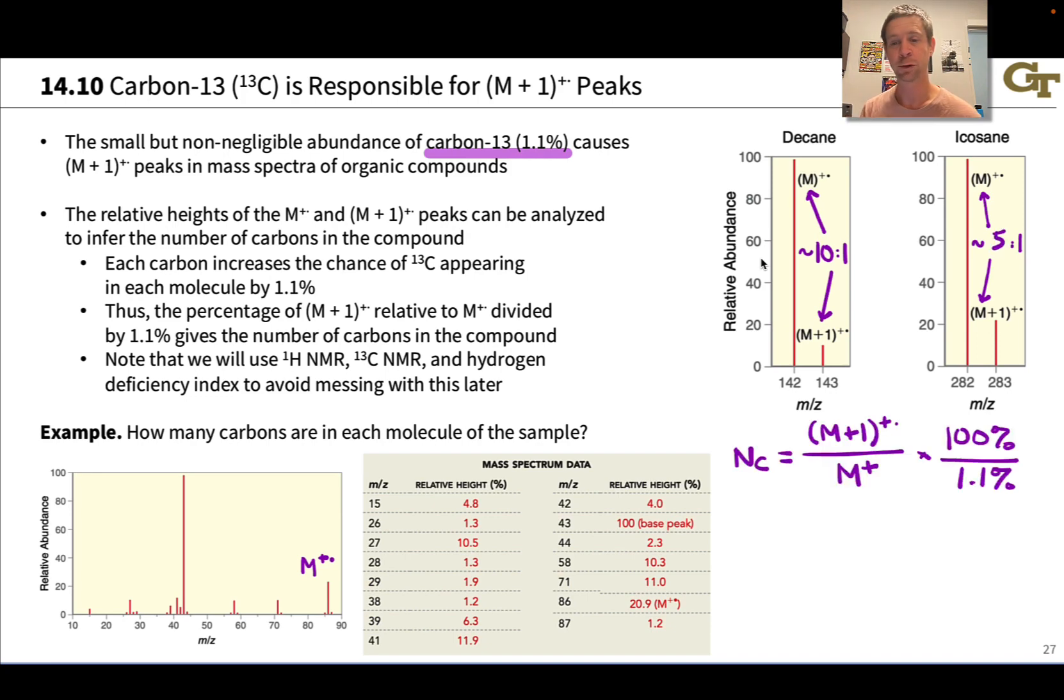So how do we go about doing this? We start with the ratio of the M+1 peak to the M peak, and multiply that by 100% to get the percentage of molecules that have a carbon-13 isotope in them. Then we divide by the abundance of that isotope, 1.1%. This is going to tell us the number of carbons in the sample approximately.